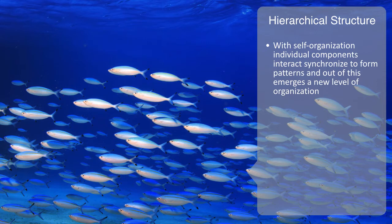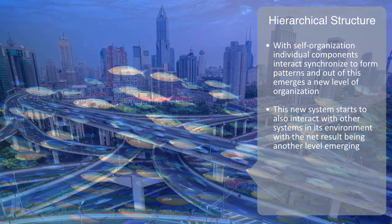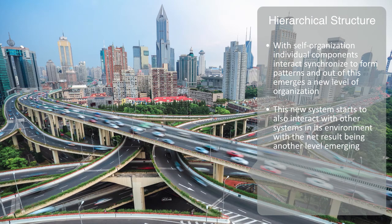Elements interact and self-organize with new levels of organization emerging. But then this new system starts to also interact with other systems in its environment, with the net result being that another level emerges. The parts in our car give rise to the global functionality of the car. But then this car is put into operation within a transportation system and interacts with other cars as we get the emergence of traffic.